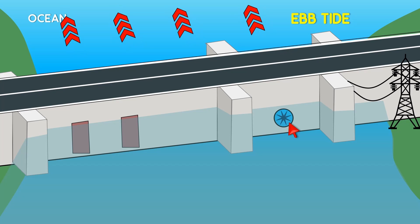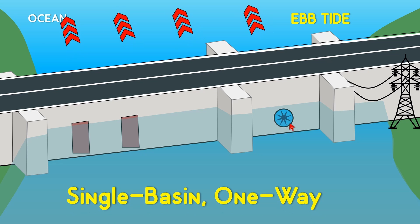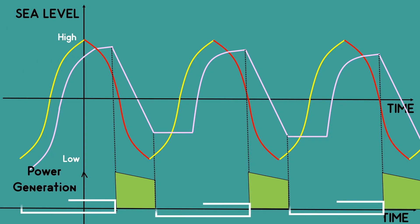This method of generating electricity is called the single basin one-way tidal power plant, because in this method we have one basin and we are generating electricity only during the ebb tide. One of the disadvantages of this method is we are not generating electricity continuously — there are periods when the electricity generation is literally zero.